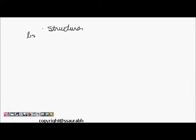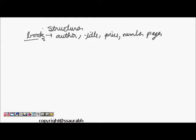Let's take an example of a book. If we want to represent a book, we have to know the name of its author, its title, price, and number of pages. These are some of the elements that we need to know in order to represent a book.